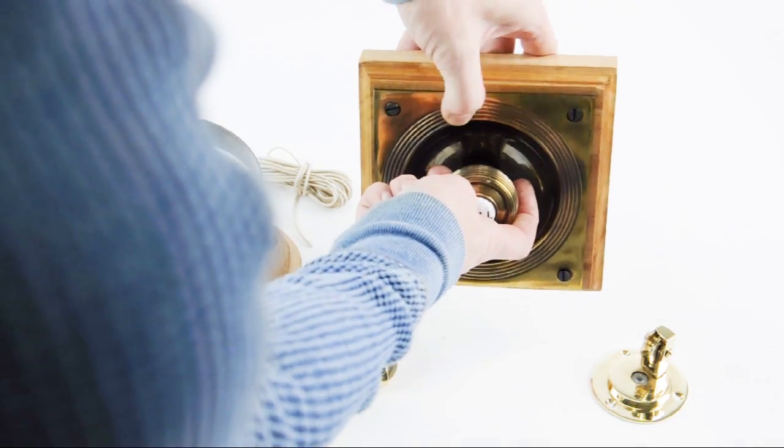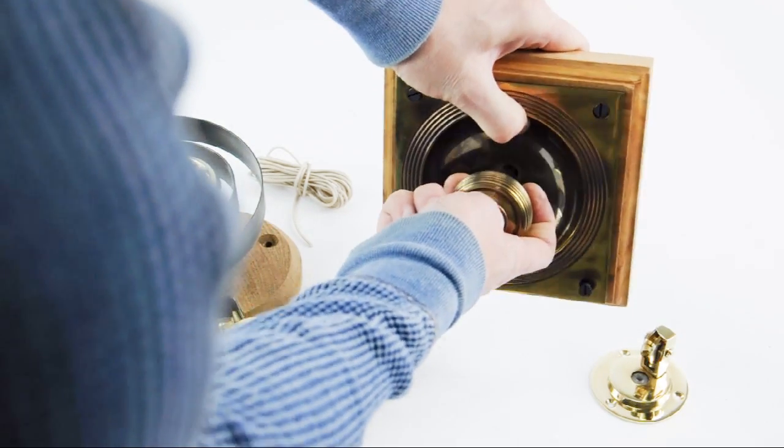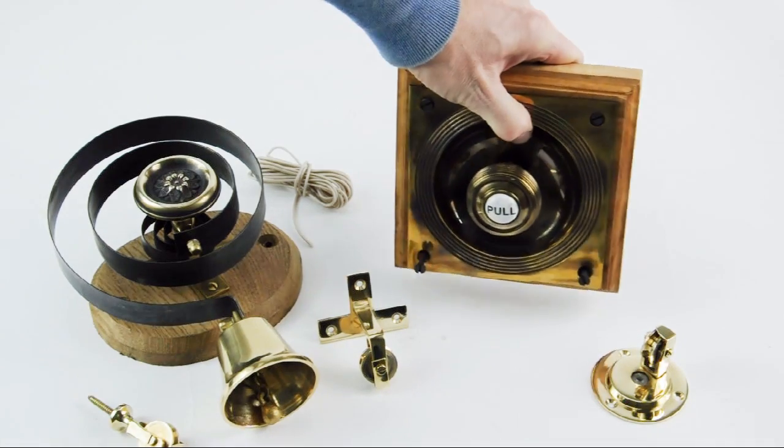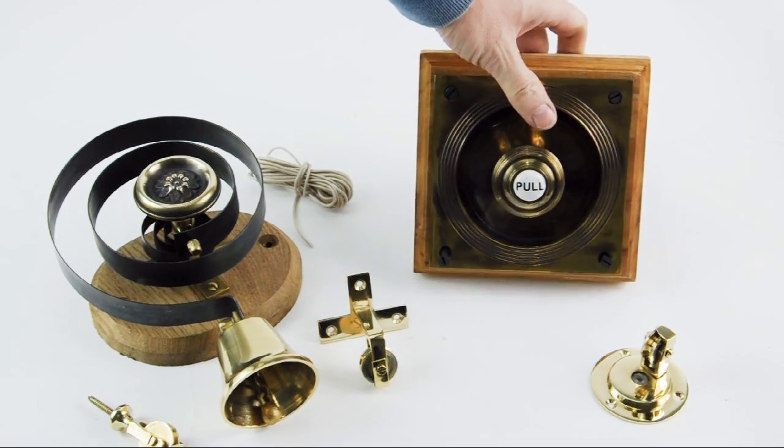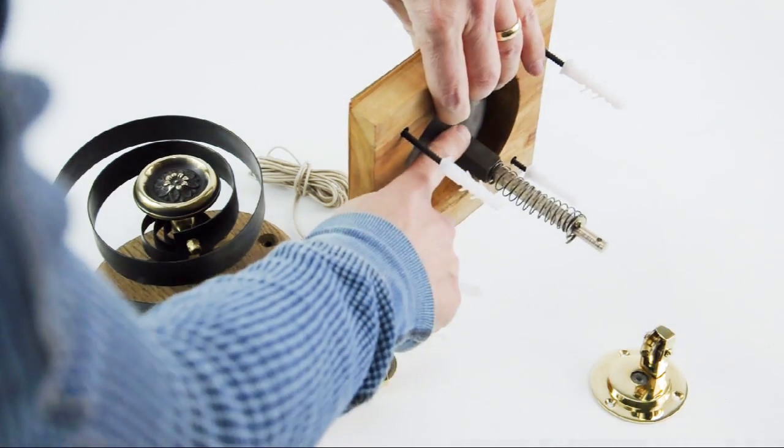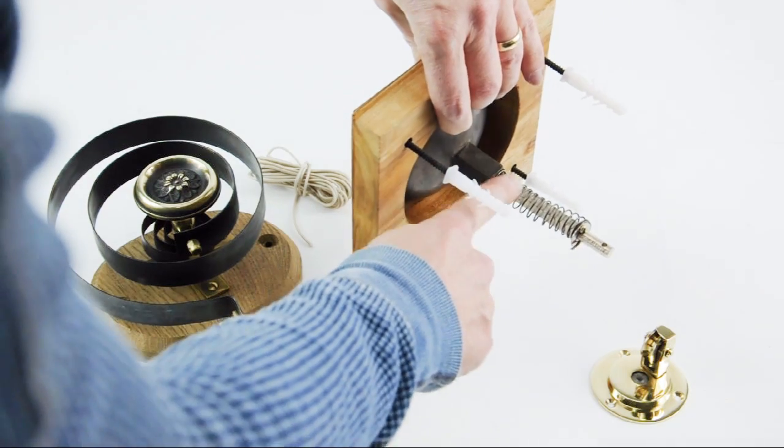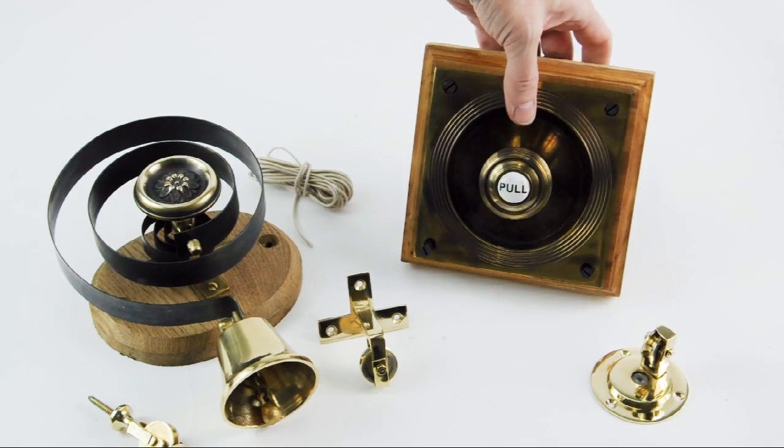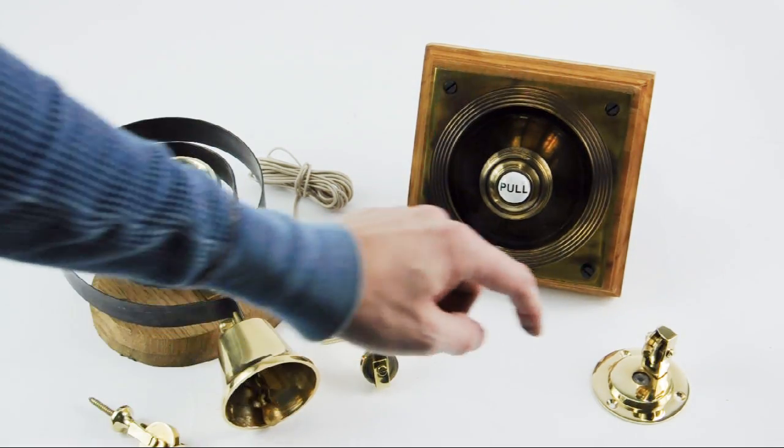So when the visitor pulls the cord on the front, it pulls the rod on the back which pulls the string and makes the bell ring on the inside of your house. It does mean that you've got to countersink this into your brickwork but it's just simply a case of drilling a hole to recess that into your brickwork and then allow the cord to pass through the wall into your house.